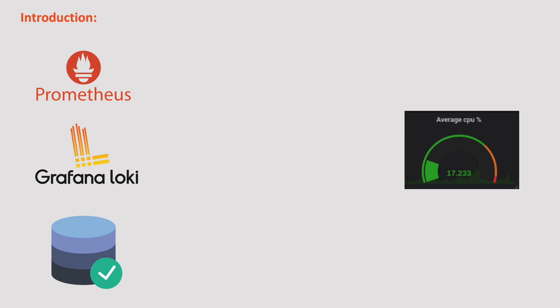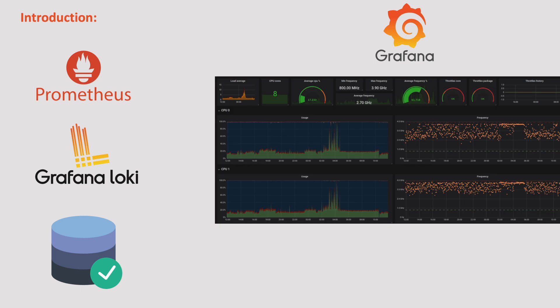Instead of manually going through all this data and trying to understand what's going on, what if there is a way to visualize this data in some graphs and understand what's happening at a single glance? For example, creating a gauge panel to check the CPU usage with the data stored in Prometheus. That's where Grafana comes into the picture. With Grafana, we can query and visualize our data in beautiful dashboards to understand our metrics no matter where they are stored — be it Prometheus, Loki, InfluxDB, Elasticsearch, MySQL, etc.